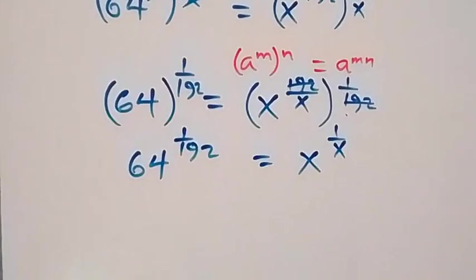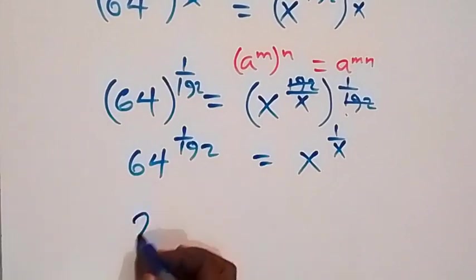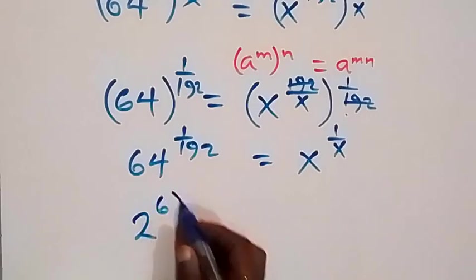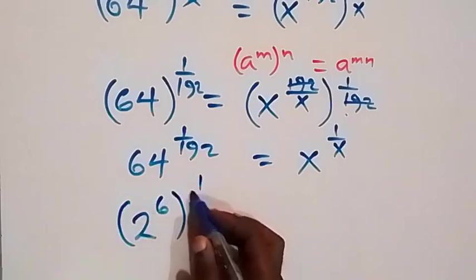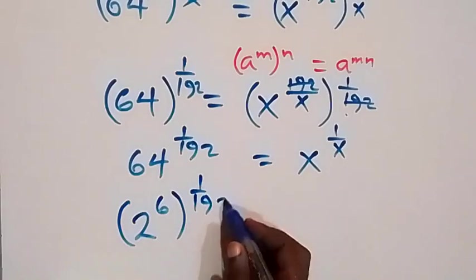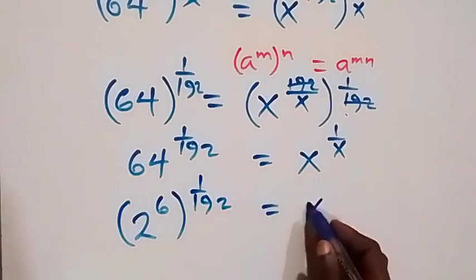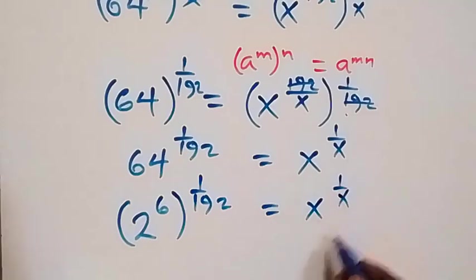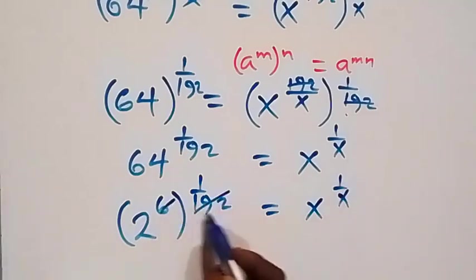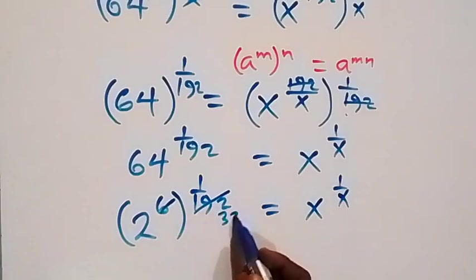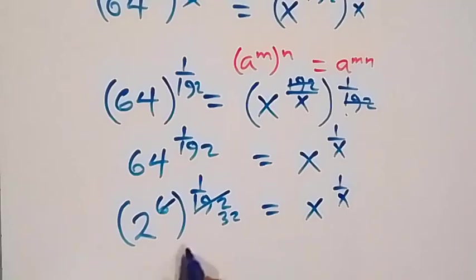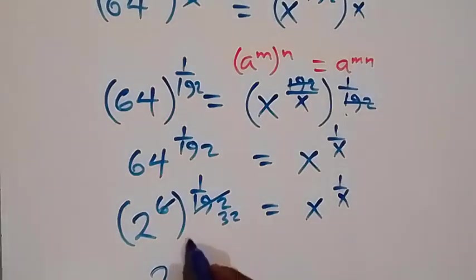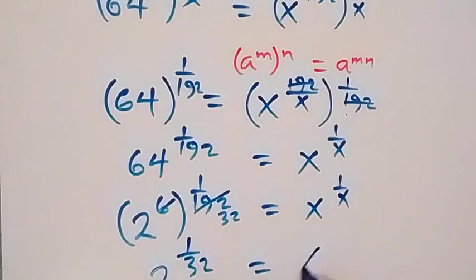From here, we can express 64 as 2 raised to power 6, then raised to power 1 over 92. And here, 6 over 92 simplifies to give us 2 raised to power 1 over 32 equals to x raised to power 1 over x.